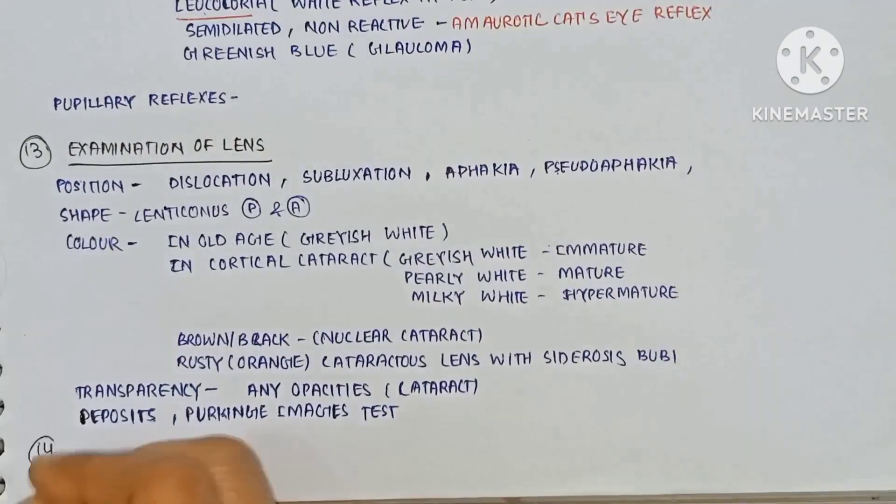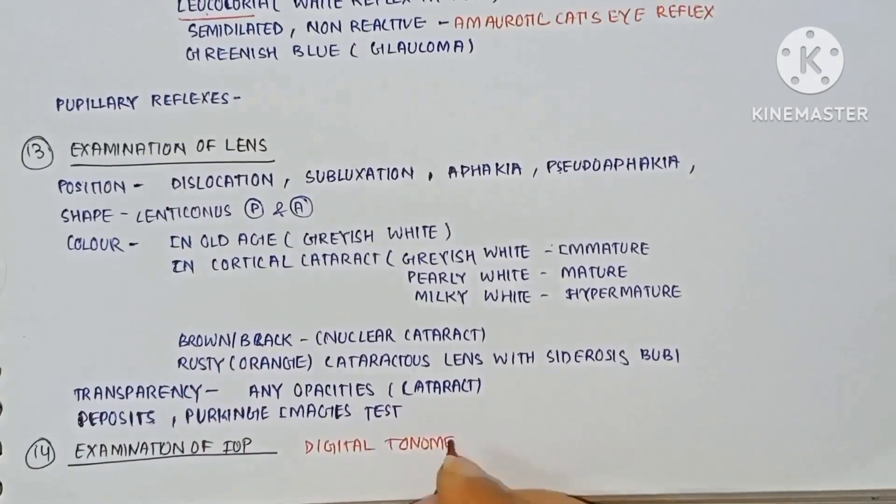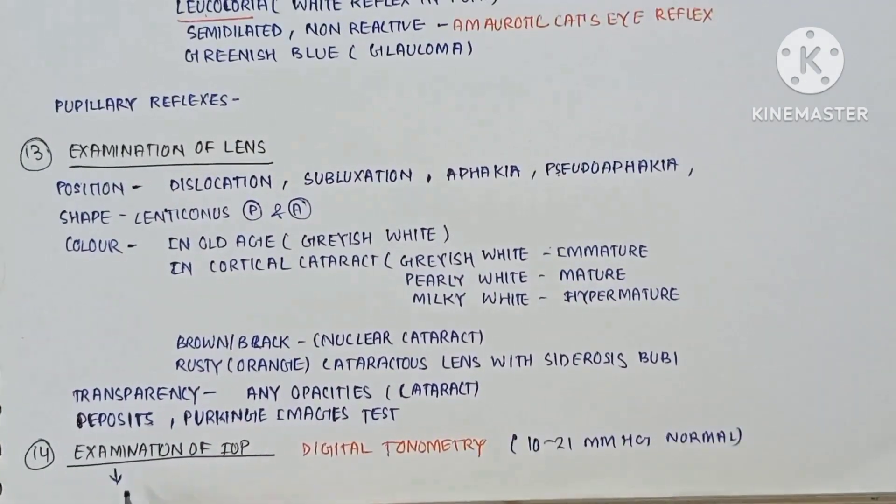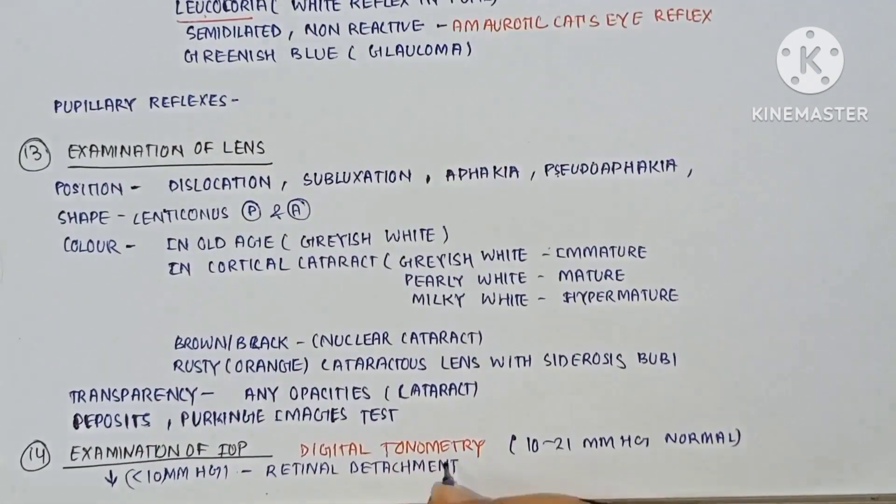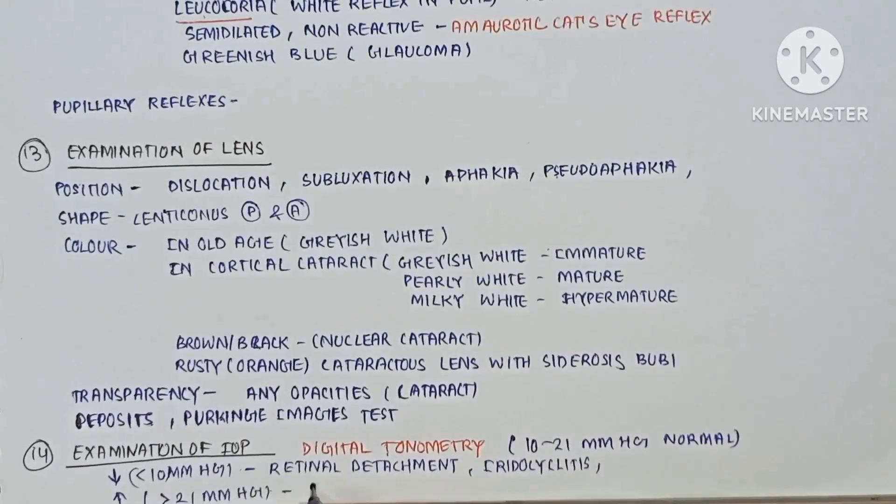The examination of the intraocular pressure, the digital tonometer 10 to 21 mmHg is the normal pressure, decreased in retinal detachment, iridocyclitis and increased in glaucoma. Thank you.